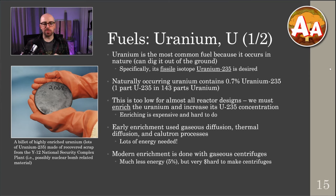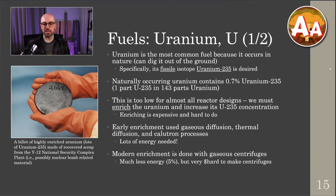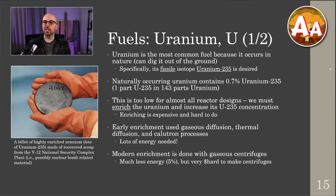Now let's get into fuels. Uranium is the most common fuel in the world because you can dig it out of the ground — it occurs in nature. It is the only naturally occurring fissile isotope. By naturally occurring, I mean it exists on Earth; all other fissile isotopes have occurred in nature at one point, but they have very short half-lives relative to Earth's age of 4.5 billion years, so they've long since decayed away.